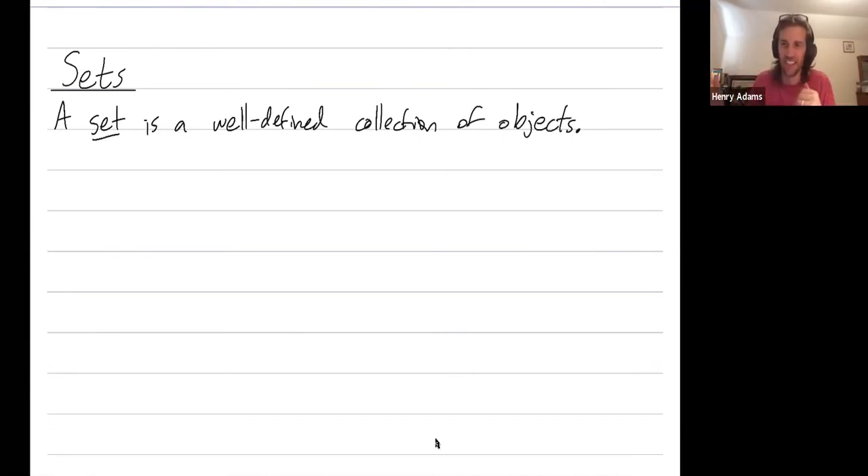It says that a set, we have to underline the word we're defining, is a well-defined collection of objects. We're sort of defining things at such a starting level that you're just using one word in place of another. So it's almost like we're just defining a set as a collection.